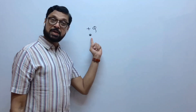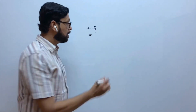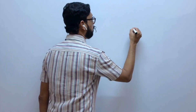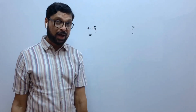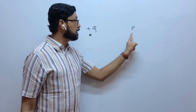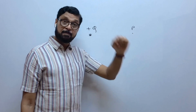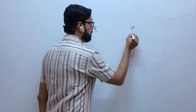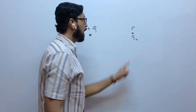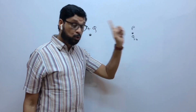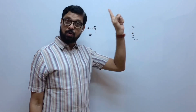Here is a charge Q. There is an electric field around this charge. Suppose this is a point P in the electric field, and you want to find out the electric intensity at this point — meaning the strength of the electric field at this point. To do that, keep a test charge q0 at that point. You want to find out the intensity at point P, so keep a test charge q0 at that point.